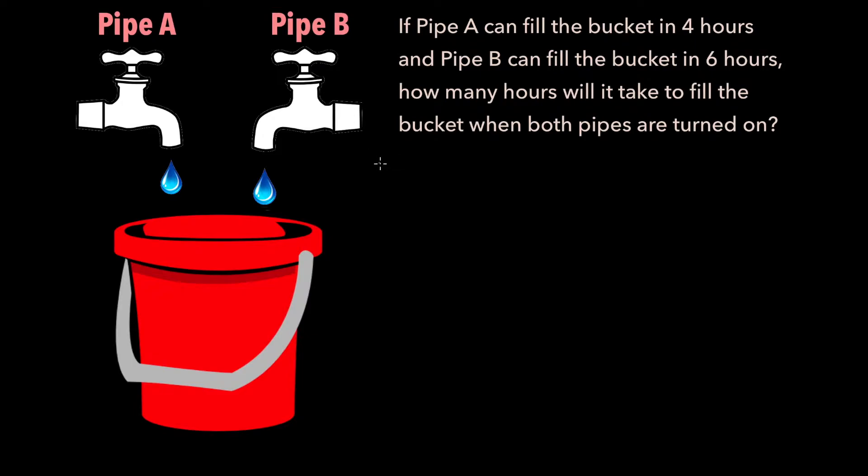Pipe A takes 4 hours to fill the bucket, which means the rate at which it's doing so, which I'm going to call R sub A, is 1 fourth buckets per hour.